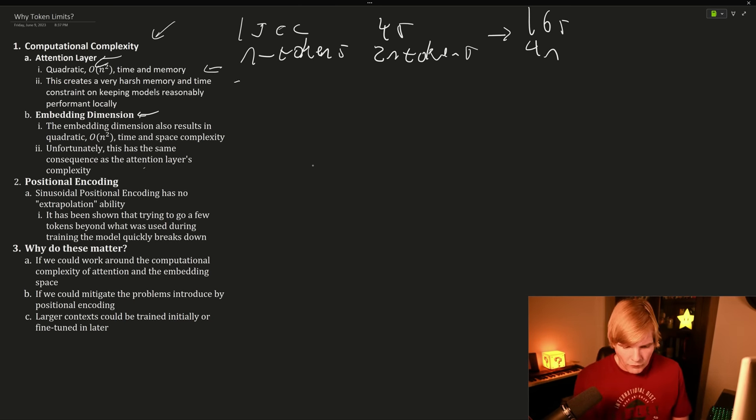So if it took 256 megs of RAM for our N tokens, it will take one gig of RAM for our two N tokens. And this unfortunately also applies to our embedding dimension,